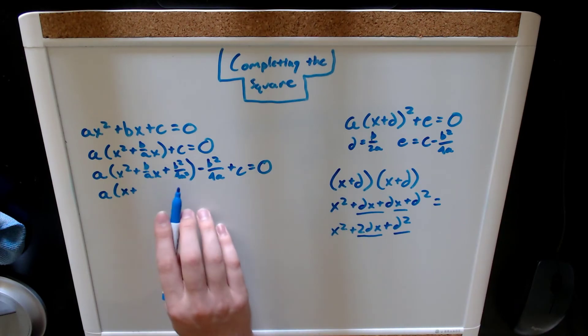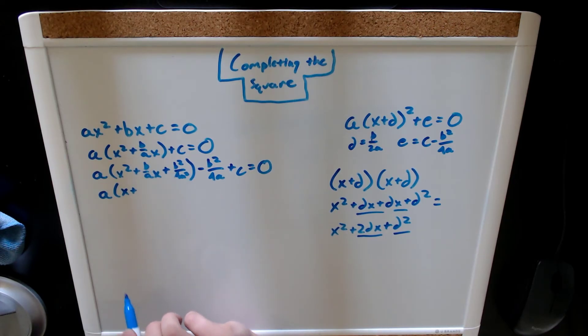So, we can take either of these terms, knowing that we have a completed square, and either divide this guy by two, or square root this one. They come out to the same thing, of course, because we have a square.